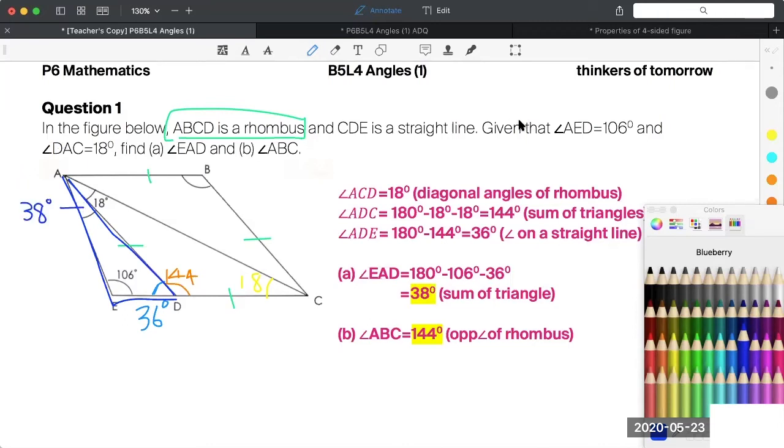Now, angle ABC is very easy, just in one step. Why? Because you know that this is within a rhombus. Correct or not?